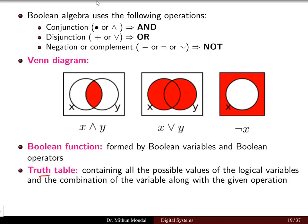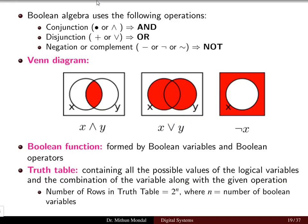We also deal with truth tables, which contain all possible values of the logical variables and combinations of those variables along with a given operation. A truth table is like a lookup table with binary variables 1 and 0 and their possible combinations in AND, OR, or NOT form. The number of rows in a truth table depends on 2 to the power N, where N is the number of Boolean variables involved.